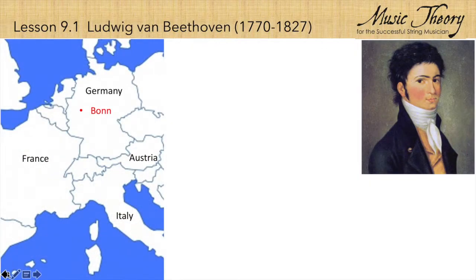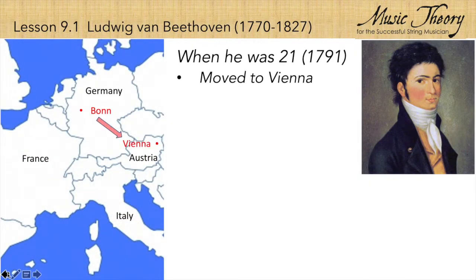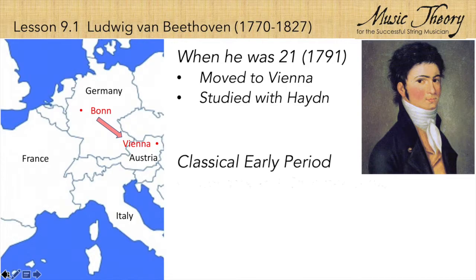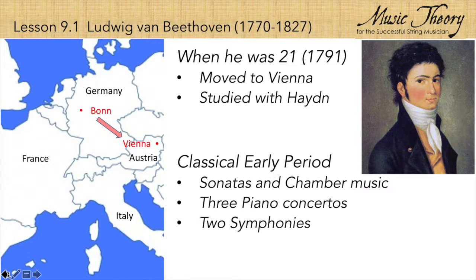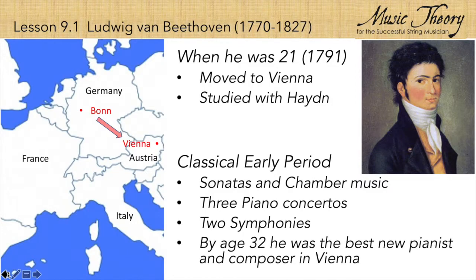He grew up in Bonn, Germany, and when he was 21, Beethoven moved to Vienna to study with Franz Josef Haydn. As his composition skills grew, he published chamber music, concertos, and two symphonies, all modeled after the work of Haydn and another classical giant, Wolfgang Amadeus Mozart. By the age of 32, Beethoven was regarded as the best new pianist and composer in Vienna.